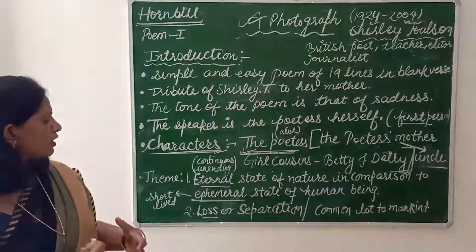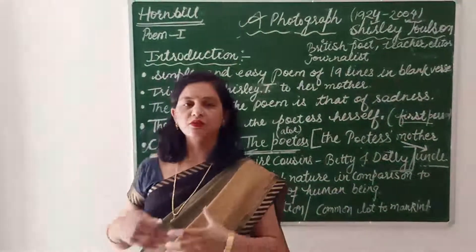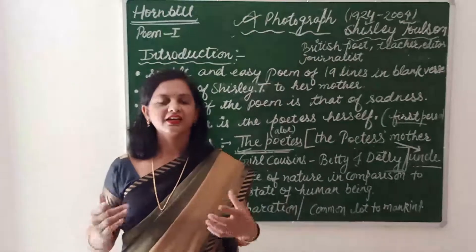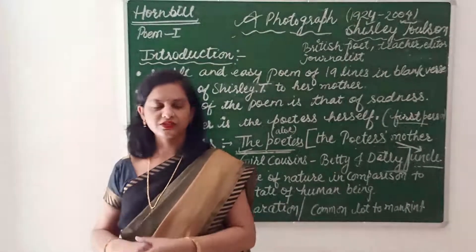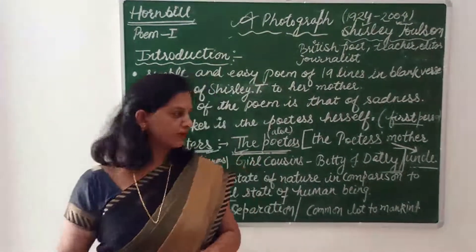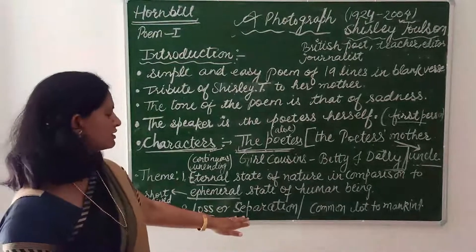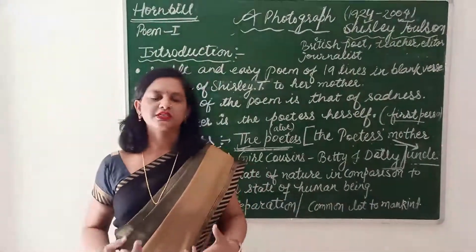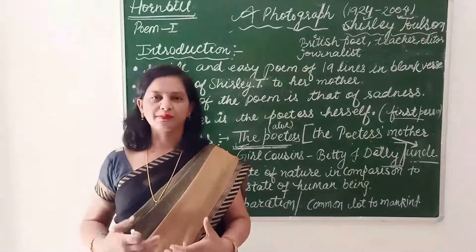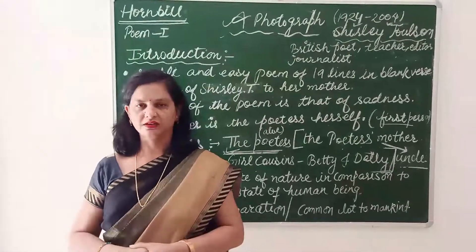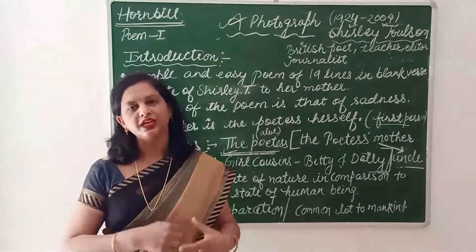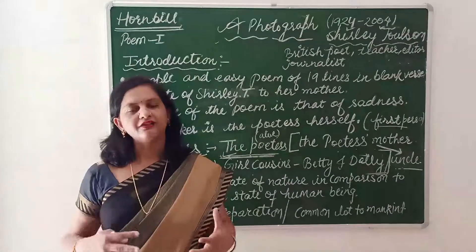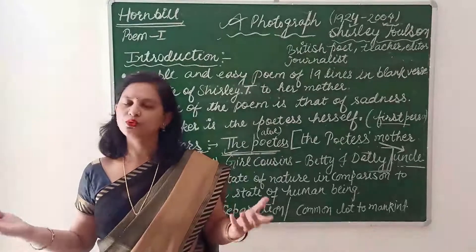The theme of the poem is that human life is very short in contrast to the unending life of nature and its objects. The next theme is that of loss and separation — each one of us has to undergo separation in some way or other, and somehow we have to deal with that because we are helpless, and life and death is a common thing to mankind.